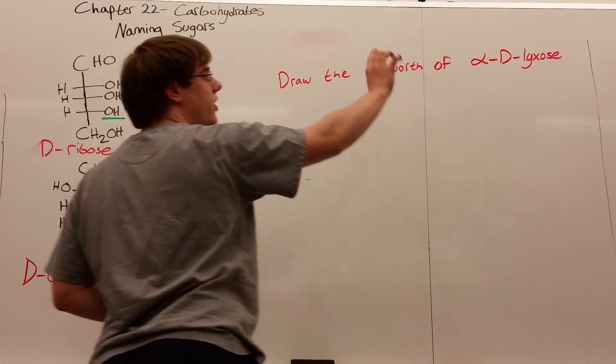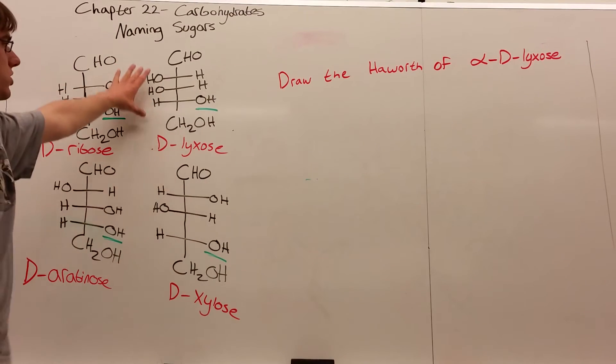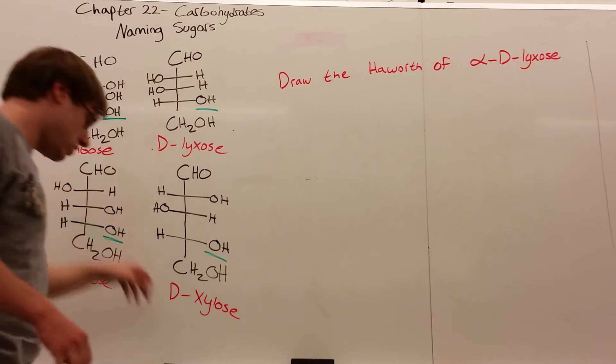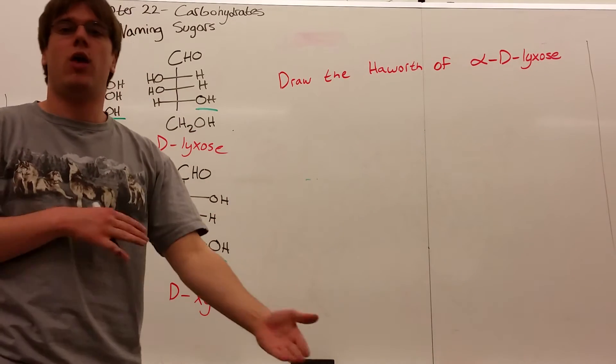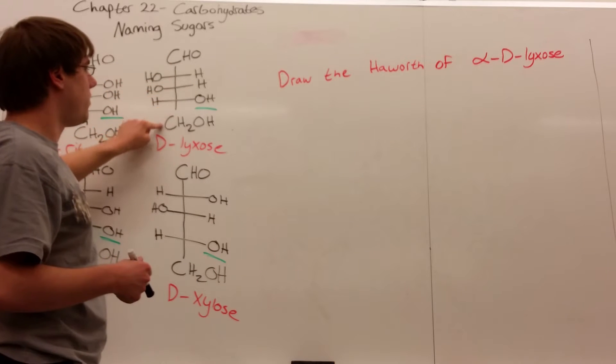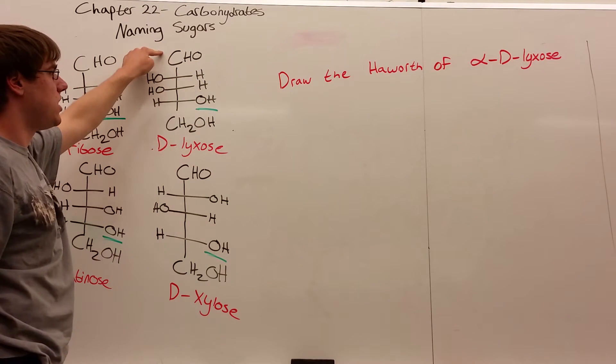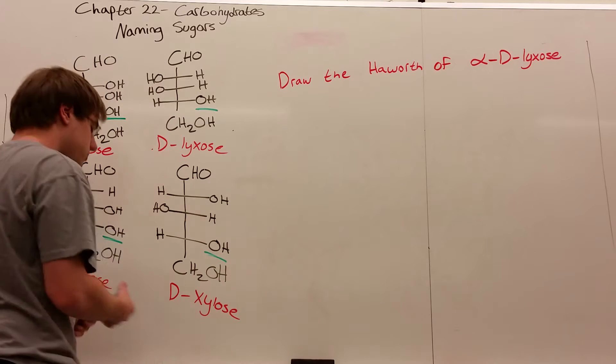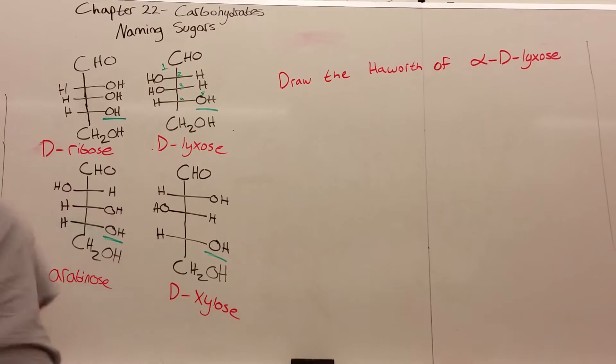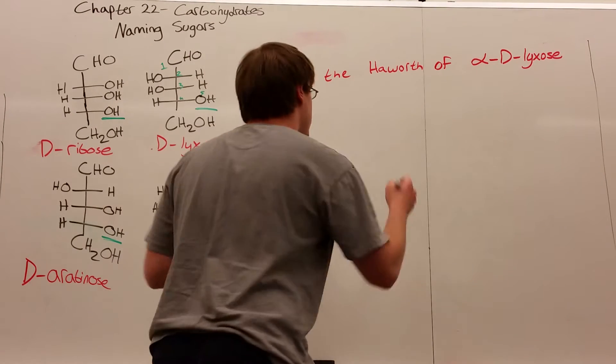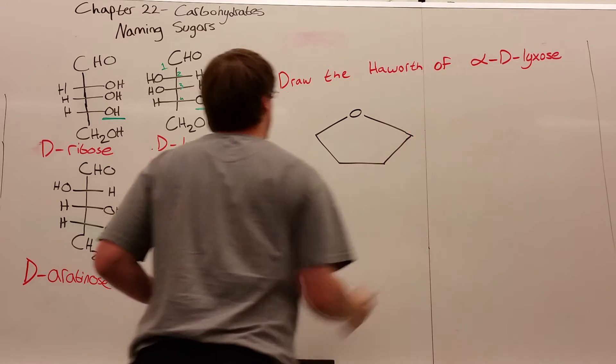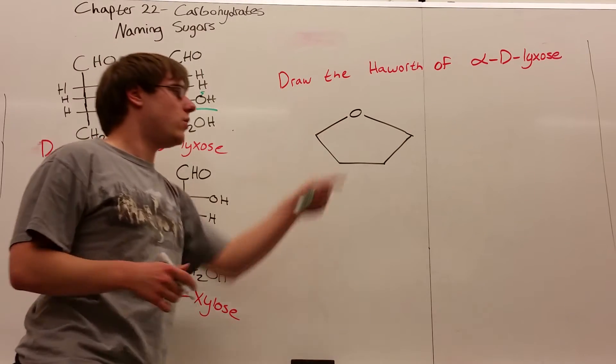We have to draw the Haworth of alpha-D-lyxose. I'm going to look at D-lyxose, which is this one, and we'll figure out the alpha and D in a second. We'll start by drawing the Haworth—it's five carbons: one, two, three, four, five. We know it's a five-membered ring because the oxygen that attacks the CHO is five carbons away. I draw the oxygen on top in the middle.